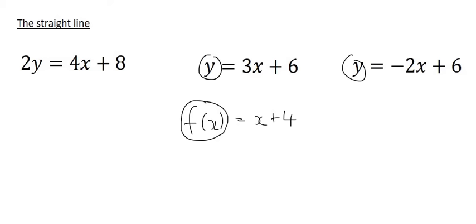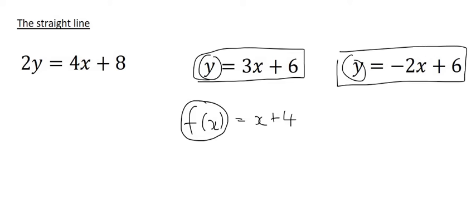So we need to get used to the idea that anything that looks like this is a straight line, as well as this one over here, and so is this one. This one's just a little weird because it has the 2 over there, but we could easily get rid of that by just dividing by 2.